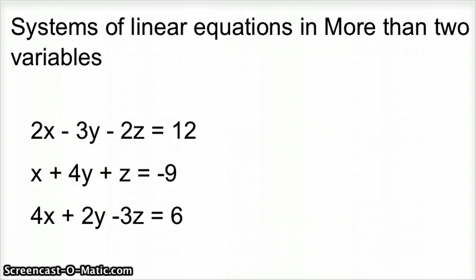Systems of equations in more than two variables. So if you have three variables, if you have three unknowns, you need to have three equations to solve those unknowns. And there are lots of methods to do this, but I think the one that's probably the easiest to start out with is the elimination method. So we're going to take equations and eliminate variables.